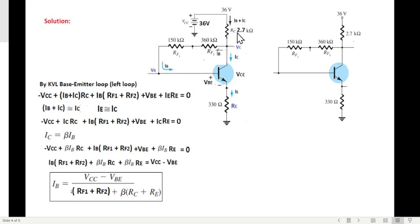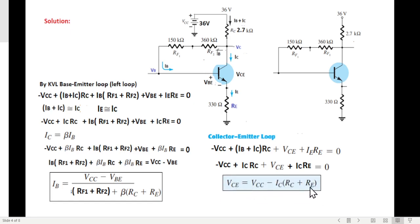The second is the collector emitter loop. Again starting from here: negative VCC, this remains same IB, IC RC, and then we're following this loop so it is plus VCE and then plus IE RE. Same assumption here: this will be replaced by IC and IE is also replaced by IC. These two assumptions. So the second equation will become like this, and further rearranging, this is our final equation that we'll use. So these two equations we'll be using.